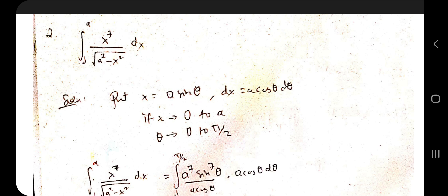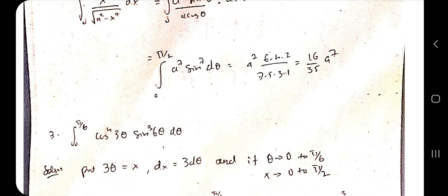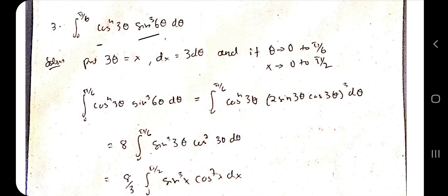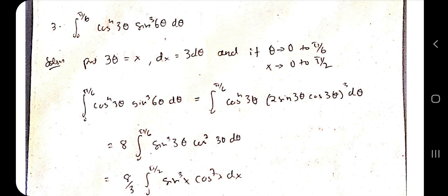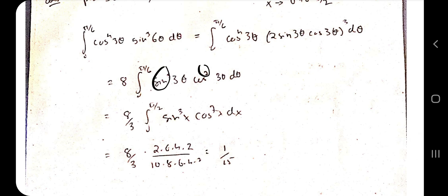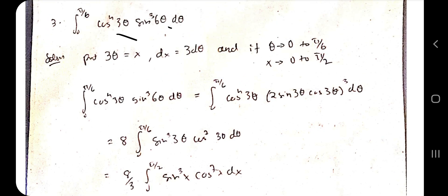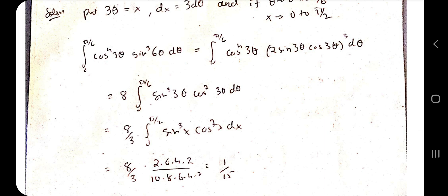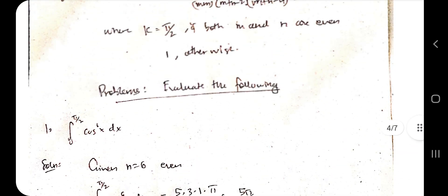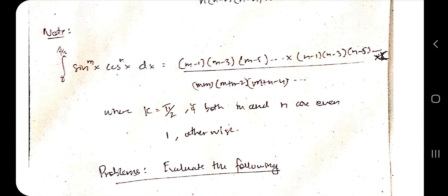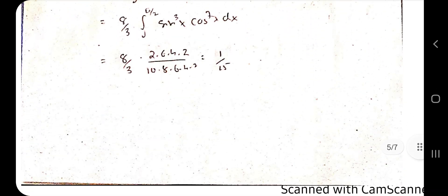After substitution, apply the limits to get the answer. For the m-n type example with 3θ and 6θ: set x = 3θ so dx = 3dθ, and note that 6θ = 2·(3θ), changing the limits accordingly. This gives the standard form sin^3(3θ)·cos^7(3θ), since both arguments must match for the formula sin^m(x)·cos^n(x). Substituting m and n values and the appropriate k gives the final answer of 1/15.